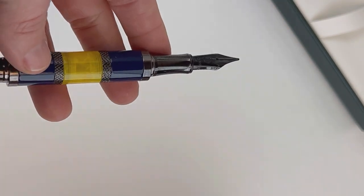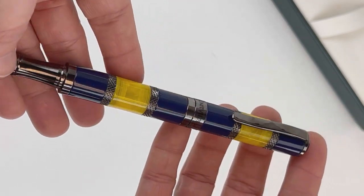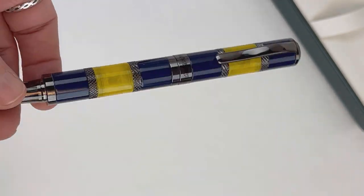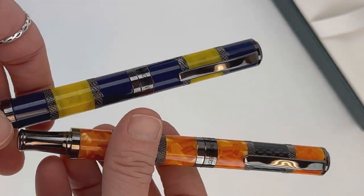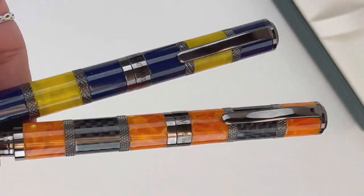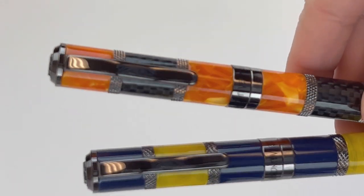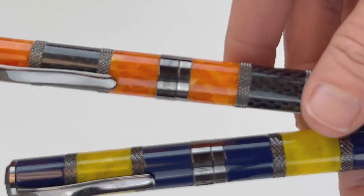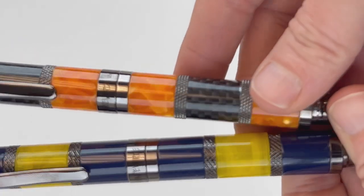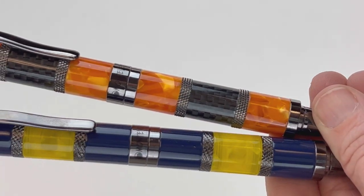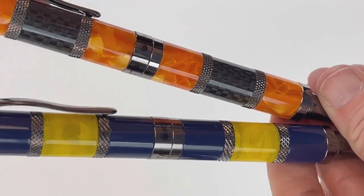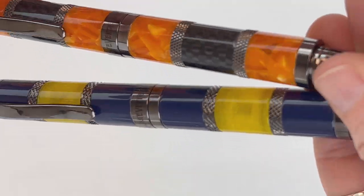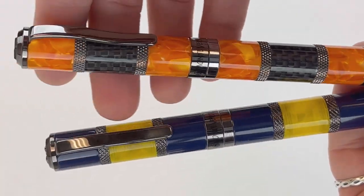All right, so that's a really good look at the new yellow and blue Monteverdi Regatta. I also want to show you, we also got a new orange and carbon release at the same time, so you've got these two new color options. If you're a fan of the Monteverdi Regatta fountain pens, they're available now, and they brought some really bright colors into the line, which I really appreciate.